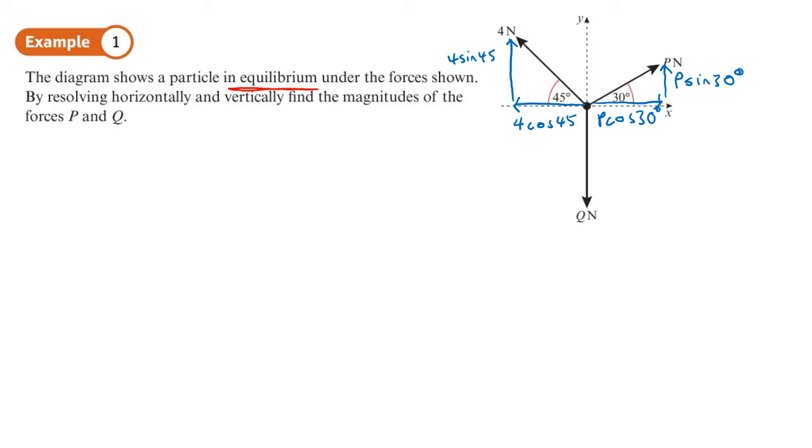So we're going to resolve or look at the forces horizontally and vertically. So let's start by looking at the horizontal forces. They will be balanced. So we have to the left, the 4 cos 45, and that will equal the P cos 30 going in the other direction. So we can easily just solve that to find P. P is going to be 4 cos 45 divided by cos 30.